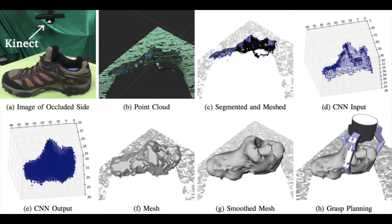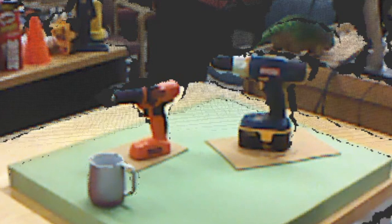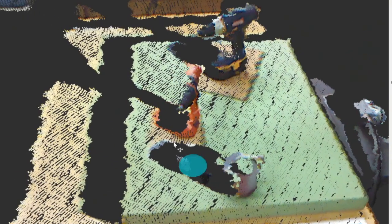Finally, a grasp can be planned and executed based on the completed mesh model. Here is an example scene containing three objects which the network has never seen before.